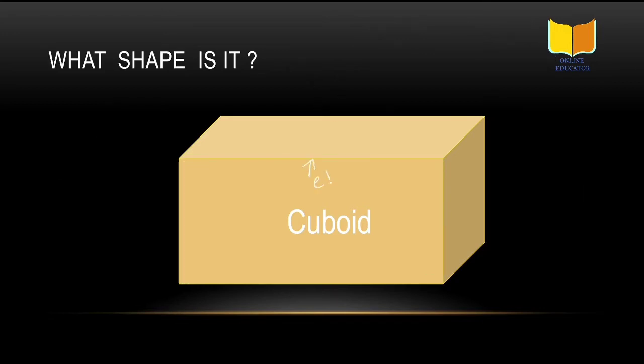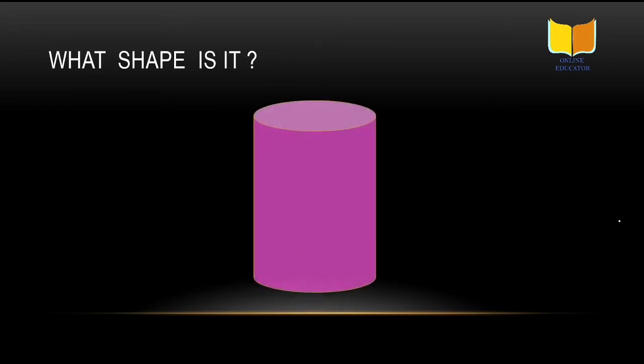So you need to learn this: six faces, eight corners, and twelve edges. What are edges? Edge is this line, this is edge. This is corner, and this is face. This whole thing is your face. So you have to learn all these things. We have discussed about cuboid.